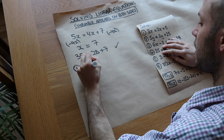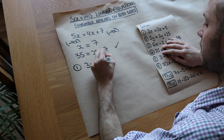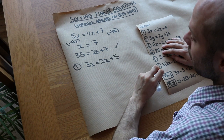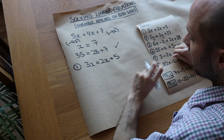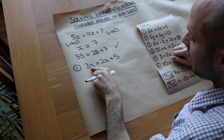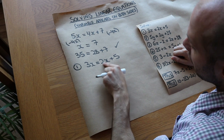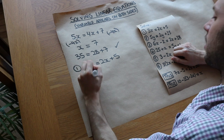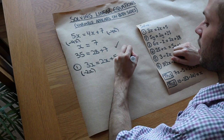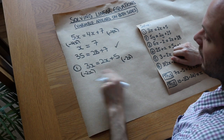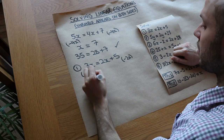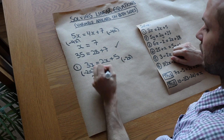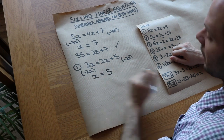We've got 3x is equal to 2x plus 5. We first decide: are there more x's on the left or right hand side? Well, 3x is bigger than 2x. So we're going to get rid of that 2x by subtracting 2x from both sides. 3x minus 2x is just x, and the 2x on the right cancels, leaving just 5. So x is 5.